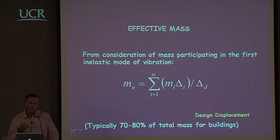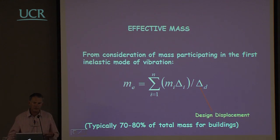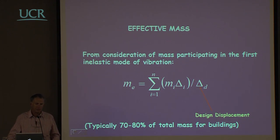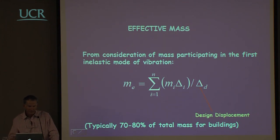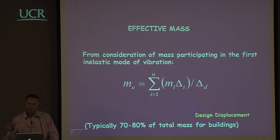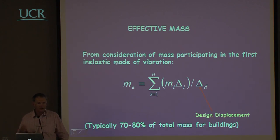We've now established how we calculate the characteristic displacement of the equivalent single degree of freedom model. The next thing we need is the mass — how much mass is associated with that mode. This is just the same as would be done in a modal analysis, where you associate a certain percentage of the mass with each mode. We are only interested in the first mode, not in the higher modes.